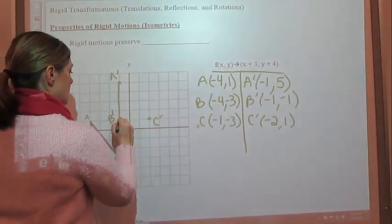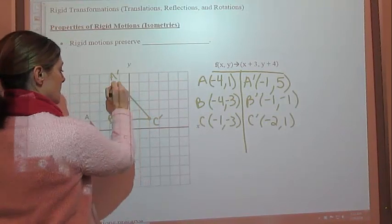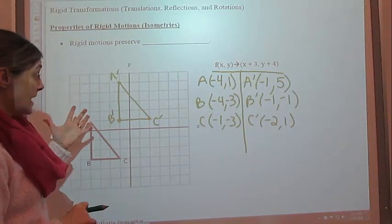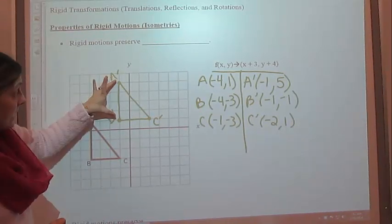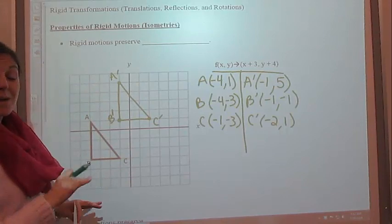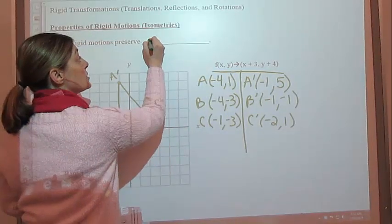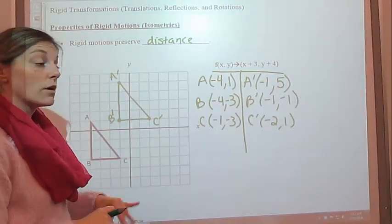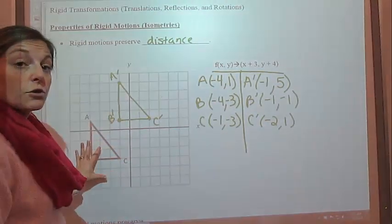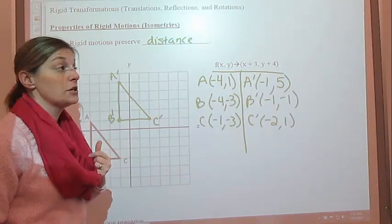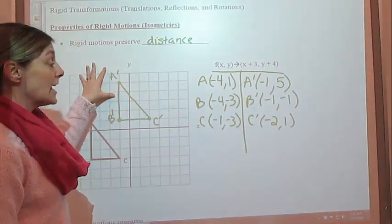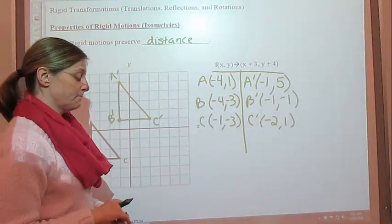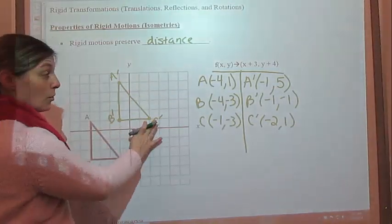So then we just connect those with straight lines. And is this a rigid motion? Yes, it is, because each of these side lengths is still congruent, which means that rigid motion preserves distance. The distance between the points on the original figure are still the same distance away after that rigid motion. So isometries — which is just another name for rigid motions — preserve distance. And this is what we call a translation.